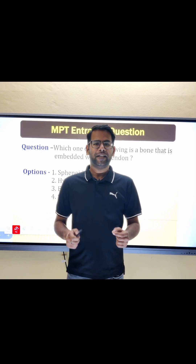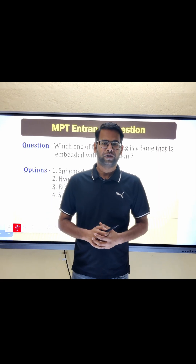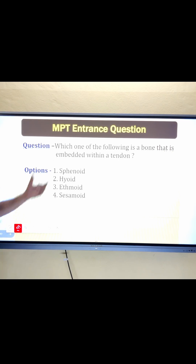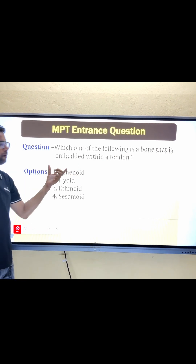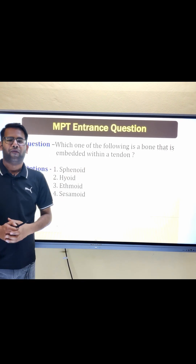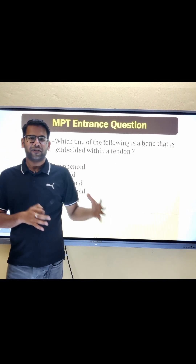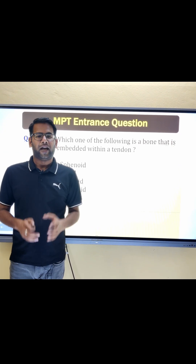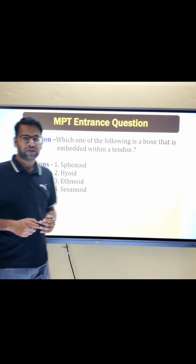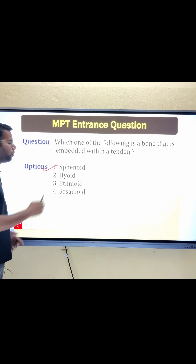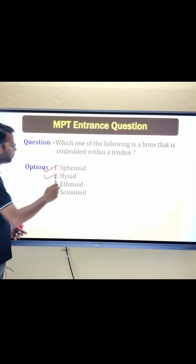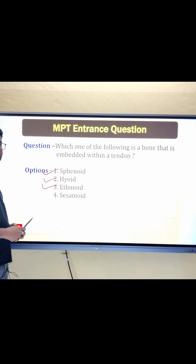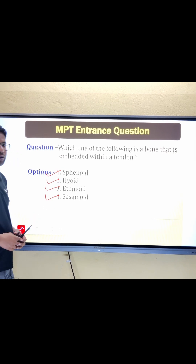Let's discuss an MPT entrance question. The question is: which one of the following is a bone that is embedded within a tendon? The options are: number one, sphenoid bone; number two, hyoid bone; number three, ethmoid bone; and number four, sesamoid bone.